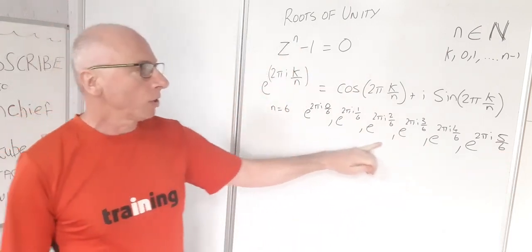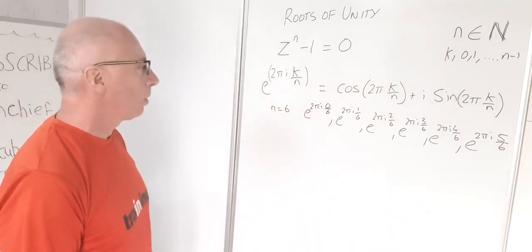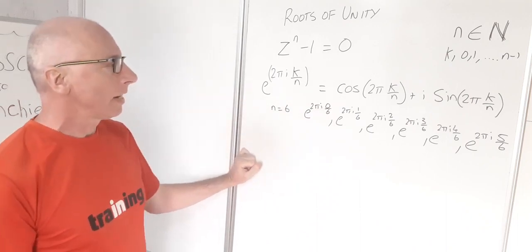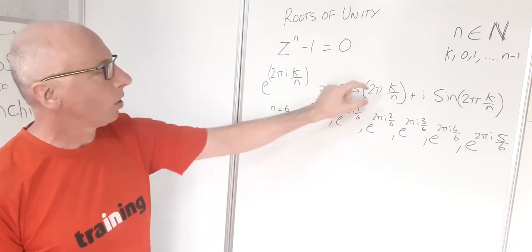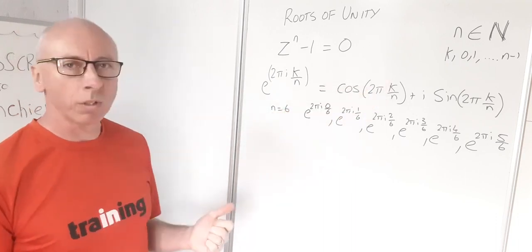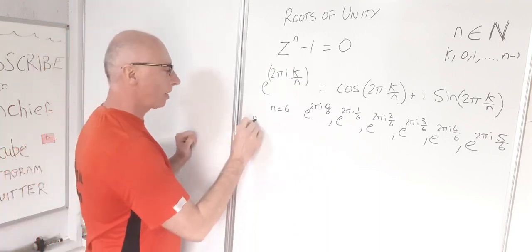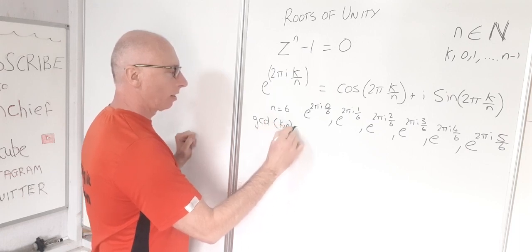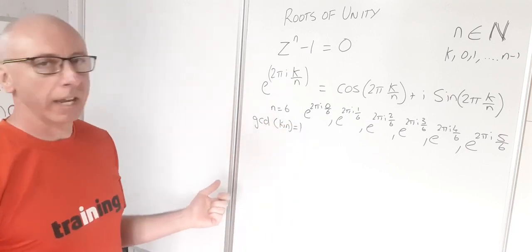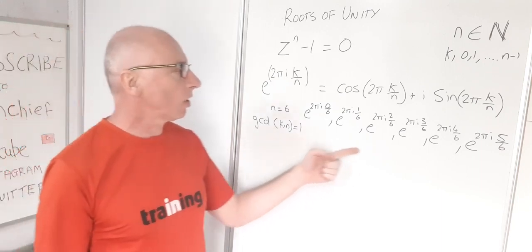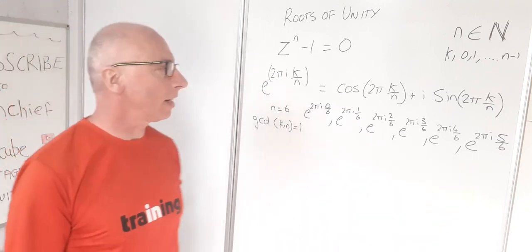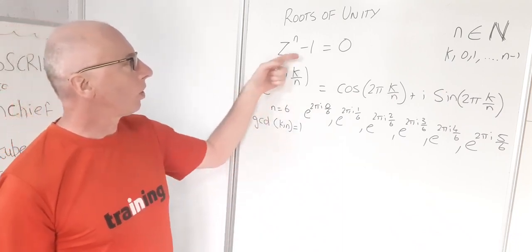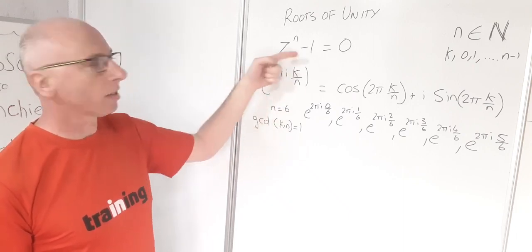It's important to look at them in this way when trying to identify which ones form a primitive root of unity. A primitive root of unity requires the greatest common divisor of k and n to equal 1 — so k and n must be co-prime.